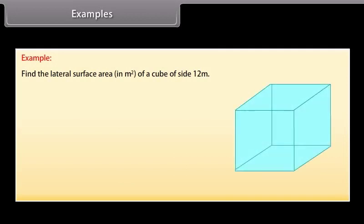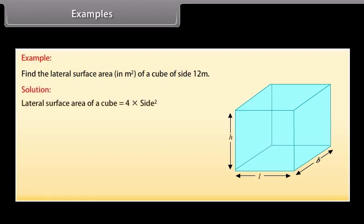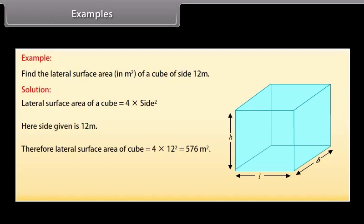Example: Find the lateral surface area in square meters of a cube of side 12 meters. Solution: Lateral surface area of a cube = 4 × side². Here side = 12 meters, so lateral surface area = 4 × 12² = 4 × 144 = 576 square meters.